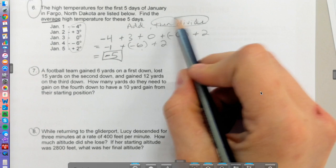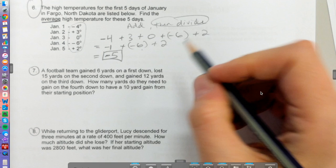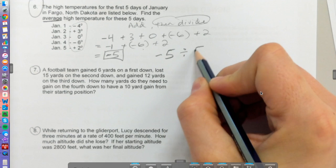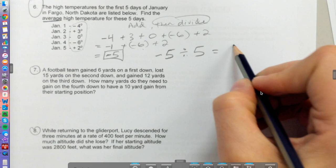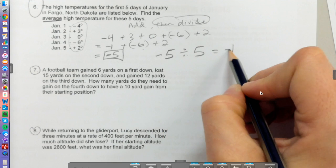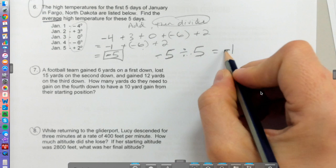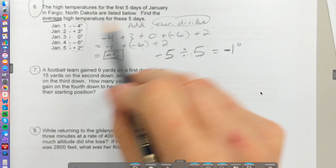Then you need to divide by the amount you have. I have one, two, three, four, five temperatures, so I take that total and divide by 5 because that's how many temperatures I have. 5 divided by 5 is just 1, and my answer will be negative because one of these is negative. A negative divided by a positive is a negative, so my average is -1 degrees.